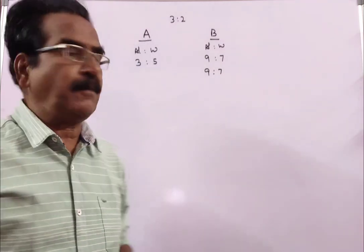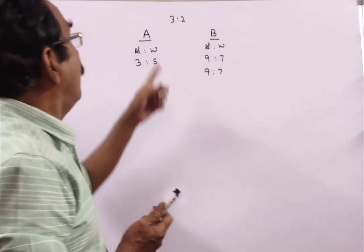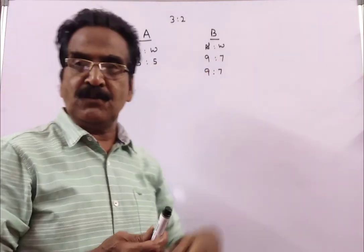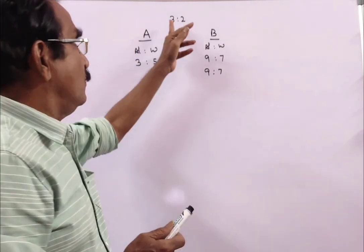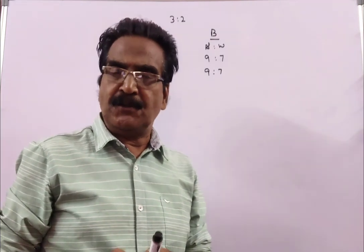The problem is given in the description box. Two vessels A and B contain alcohol and water in the ratio 3 is to 5 and 9 is to 7. These two are mixed in the ratio 3 is to 2 to form a resultant solution.